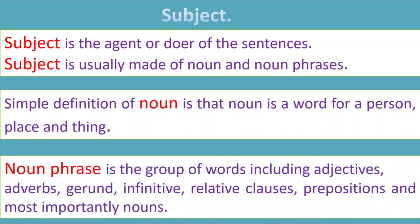A noun phrase is a group of words which includes adjectives, adverbs, gerunds, infinitives, relative clauses, prepositions, and most importantly nouns. So a noun phrase is a combination of all those words. We will talk about noun phrases in examples so that you'll understand better.